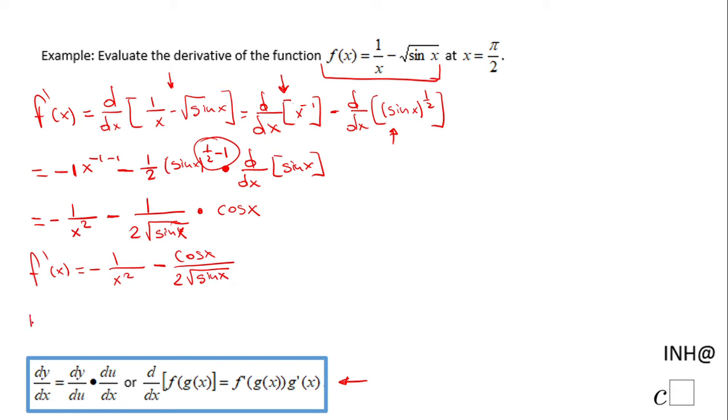And now we're going to replace x with pi over 2, and we have negative 1 over pi over 2 squared minus cosine of pi over 2 over 2 square root of sine of pi over 2. By the way, this is f prime of pi over 2.